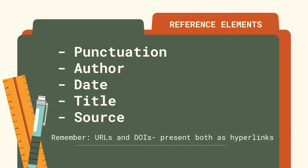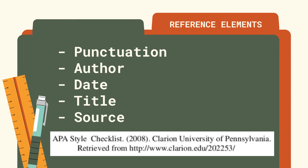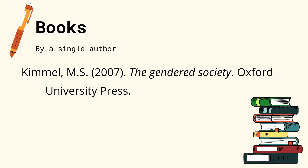Remember that URLs and DOIs are presented both as hyperlinks, so it is not necessary to include 'retrieved from' anymore in writing your source. All references in your list must be double-spaced, both between references and within references, with a hanging indent of half an inch for references with more than one line.